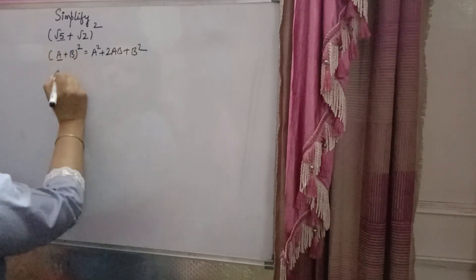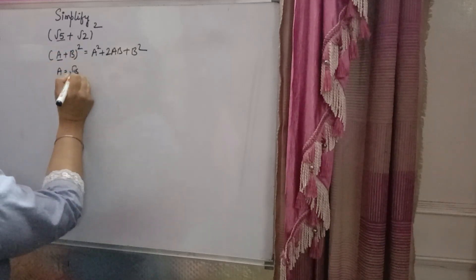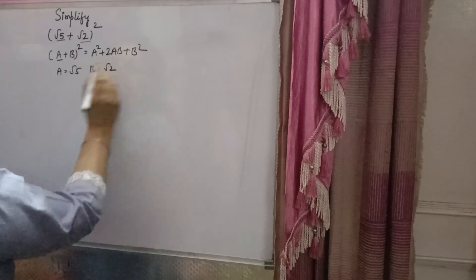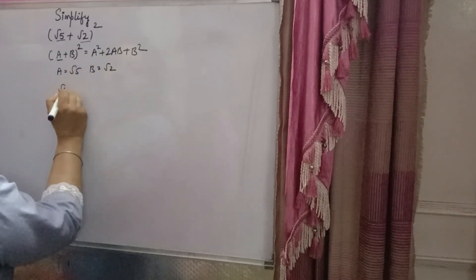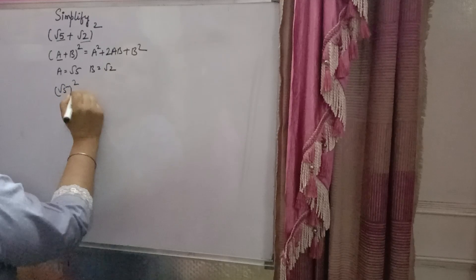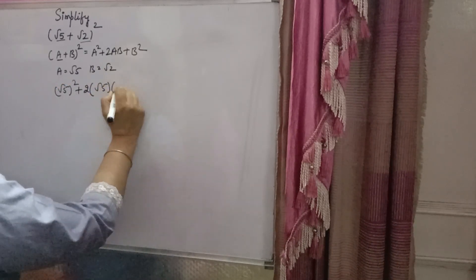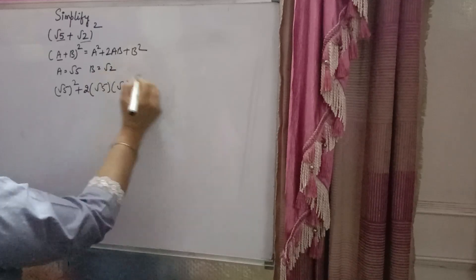In this case, a is √5 and b is √2. So you will put a², which means (√5)², plus 2 times a (which is √5) times b (which is √2), plus b², where b is √2.